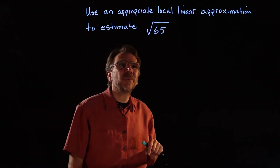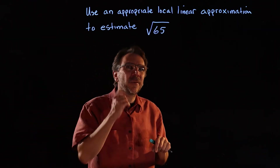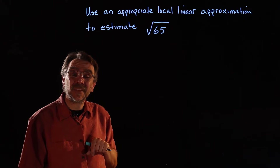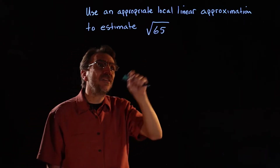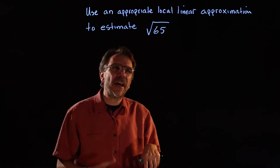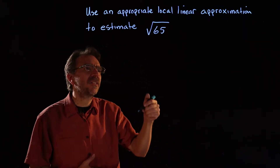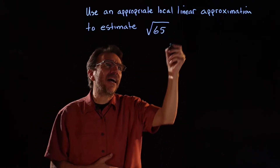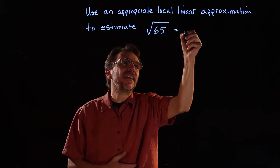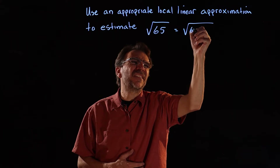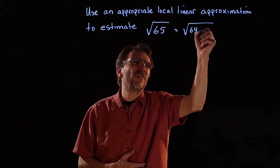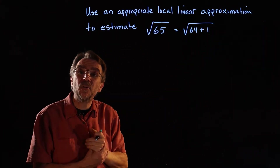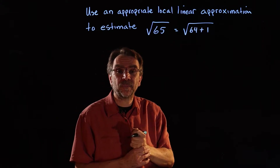Here we're asked to use an appropriate local linear approximation to estimate the square root of 65. To do these, you want to find a value that's close and known. Looking at the square root of 65, that's close to the square root of 64 — it's 64 plus 1 — and we know what the square root of 64 is.